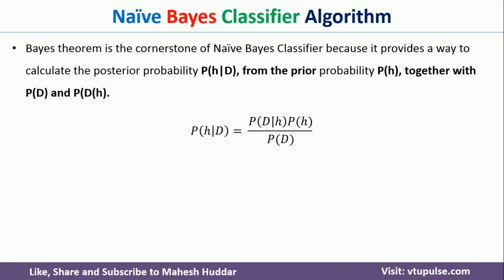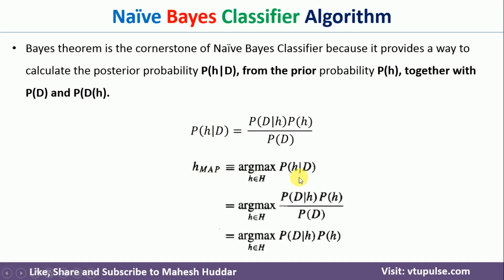What we do is, for all possible hypotheses h in the hypothesis space, we calculate the posterior probability using this formula. The hypothesis which gives you the maximum value will be considered as the final answer. This is represented as: HMAP is equivalent to ARG max of probability of h given d — that is the posterior probability — for all hypotheses in the hypothesis space. We calculate this for all hypotheses, and the one which gives the maximum answer is the final hypothesis.